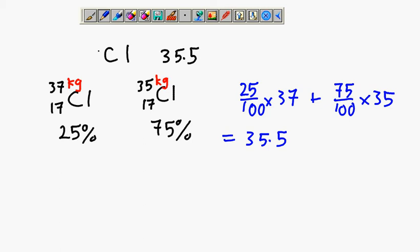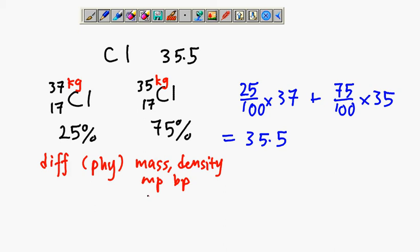It seems like chlorine 35 is lighter than chlorine 37. They differ in their physical properties. What are the physical properties? Like mass, density, melting point, boiling point, rate of diffusion, whether they travel fast or not.